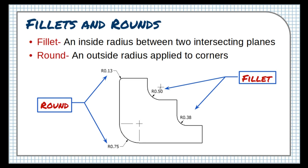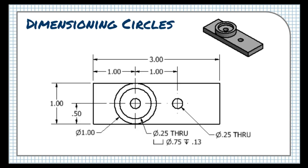Fillets and rounds also help release certain parts from molds when they're manufactured. Both of these features are made using the fillet tool in CAD, and they're dimensioned using the same arc dimensioning techniques described previously.